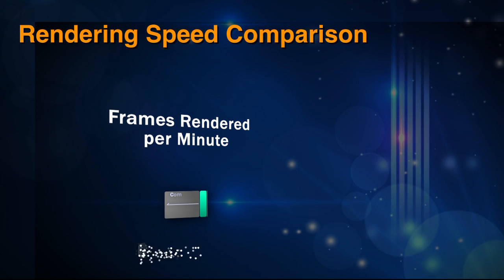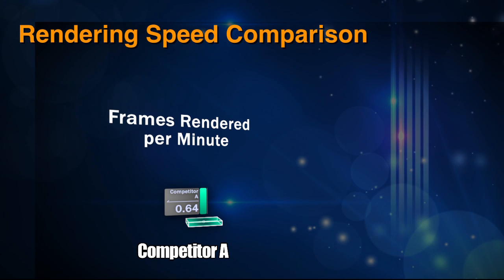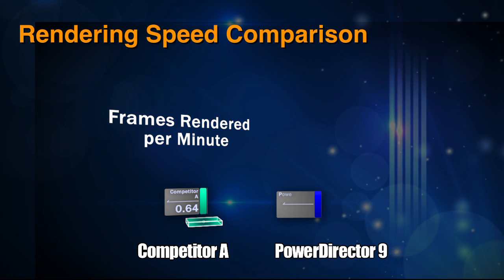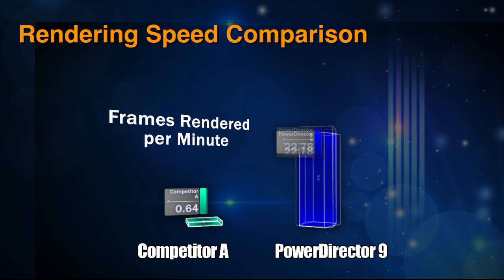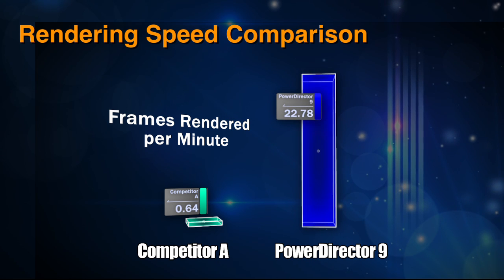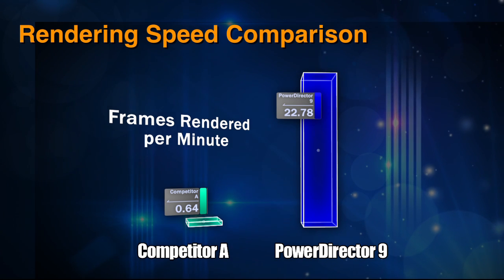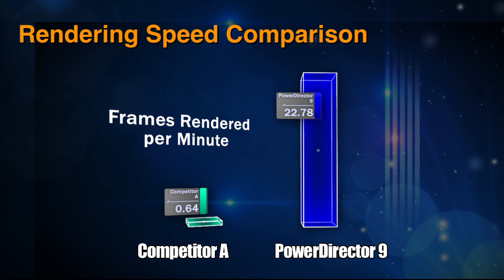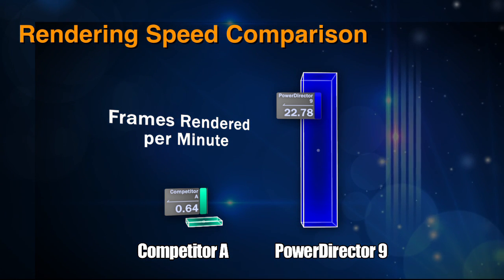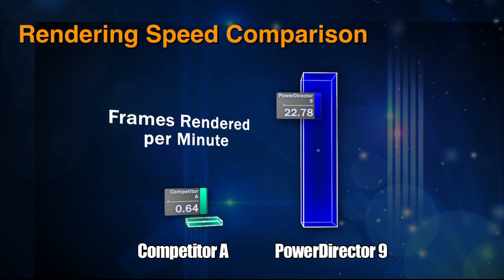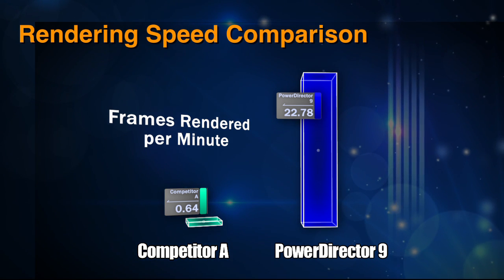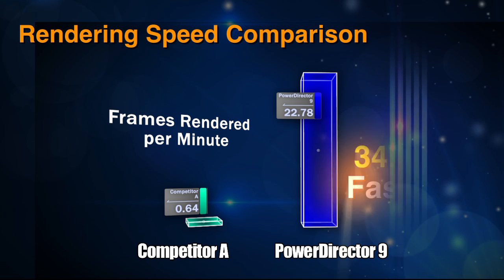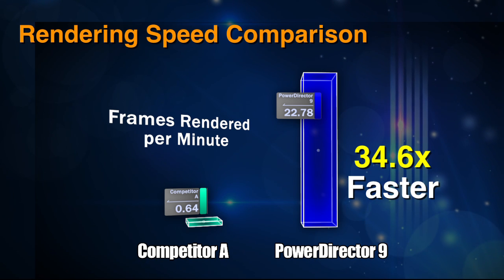We put PowerDirector 9's True Velocity 64 to the test against other consumer video editing software. While competing video editing software can take hours to render a video, PowerDirector takes a fraction of the time for the same task. With PowerDirector 9's True Velocity 64, you can render up to 34 times faster.